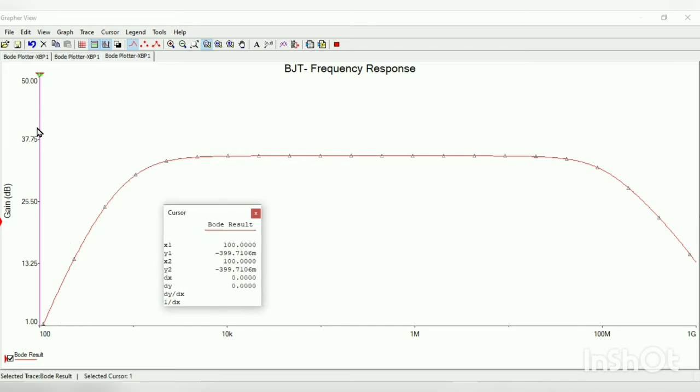Here you can see we have obtained a frequency response for our BJT circuit. Now we are going to calculate bandwidth. For that, we need to know our mid-band gain. So move the cursor to the mid-region. You can find this is the second cursor. Our Y2 value gives our mid-band gain. That is 34.4696.